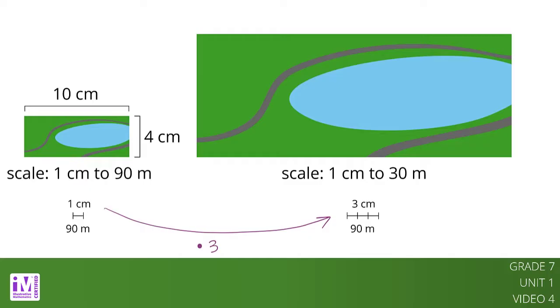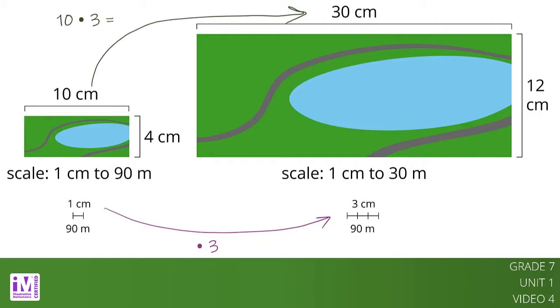The new scale drawing should be 30 centimeters long by 12 centimeters wide because 10 times 3 equals 30 and 4 times 3 equals 12. These are the same measurements we got before, but this method uses fewer calculations.